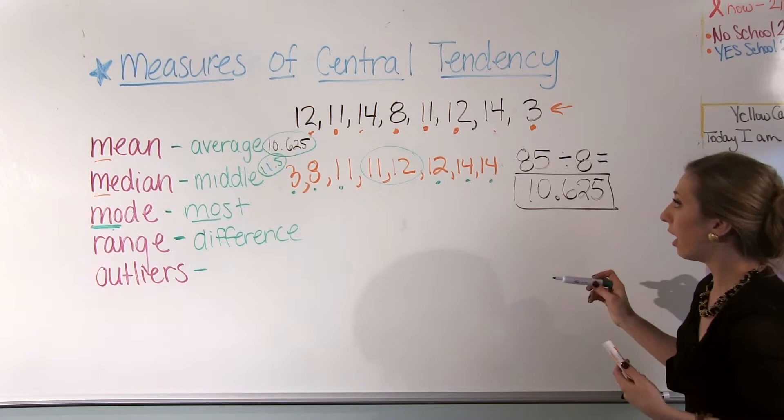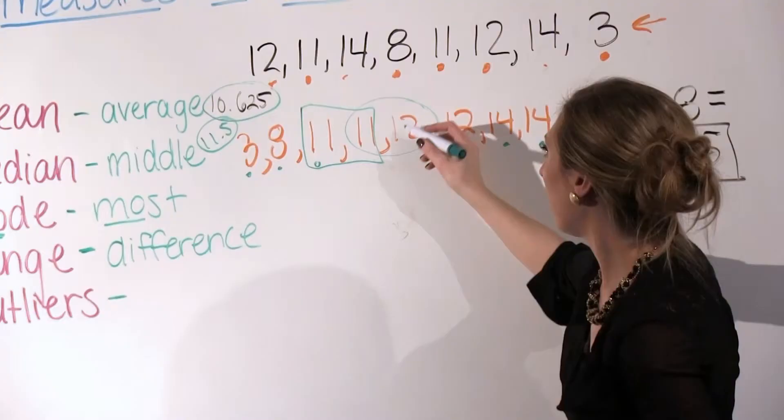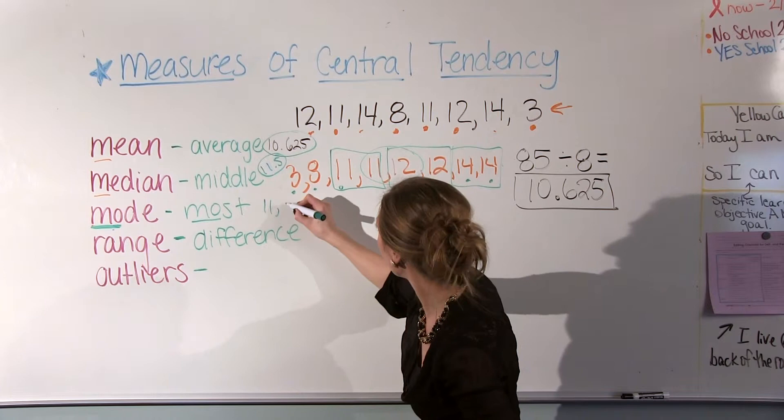In this case, you can see that I have 11 that happens twice, I have 12 that happens twice, and I have 14 that happens twice. So actually in this case, I've got three modes: 11, 12, and 14, because these numbers are occurring in my list the most often.